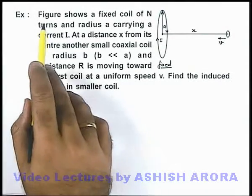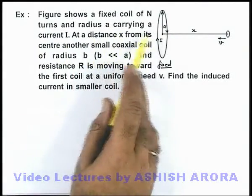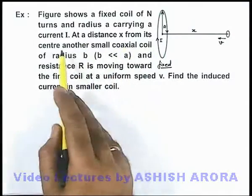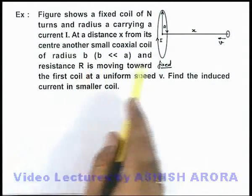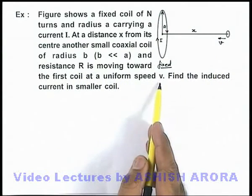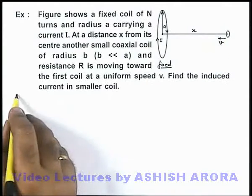In this example, the figure shows a fixed coil of N turns and radius a, which carries a current I. At a distance x from its center, another small coaxial coil of radius b and resistance R is moving towards the first coil at a uniform speed v. We are required to find the induced current in the smaller coil.